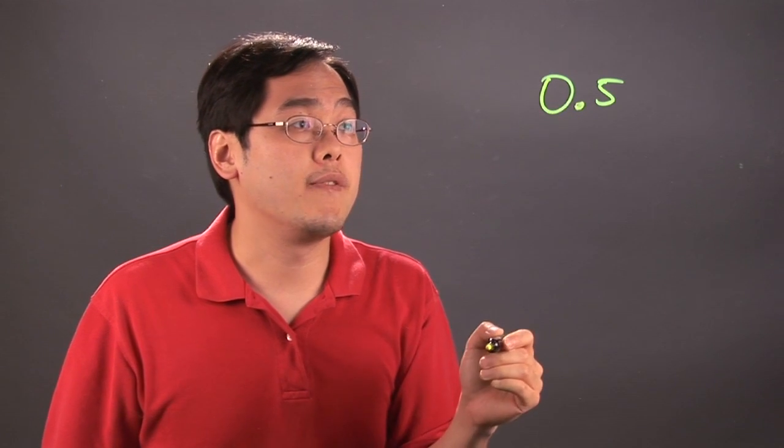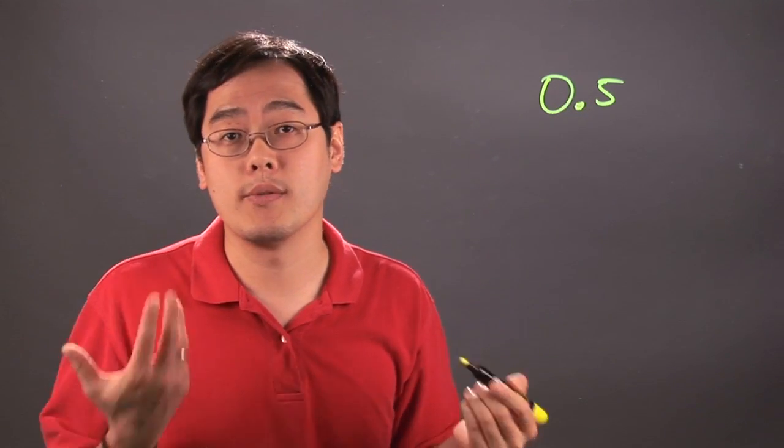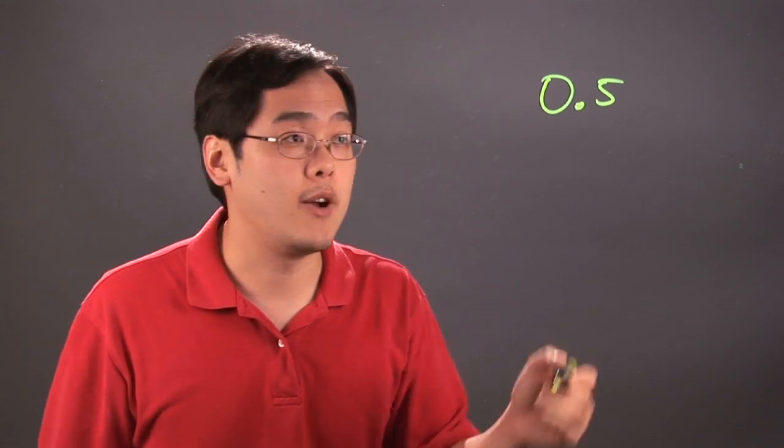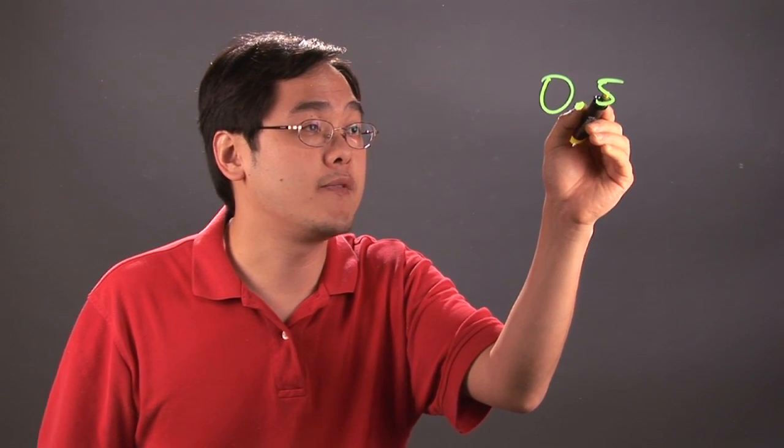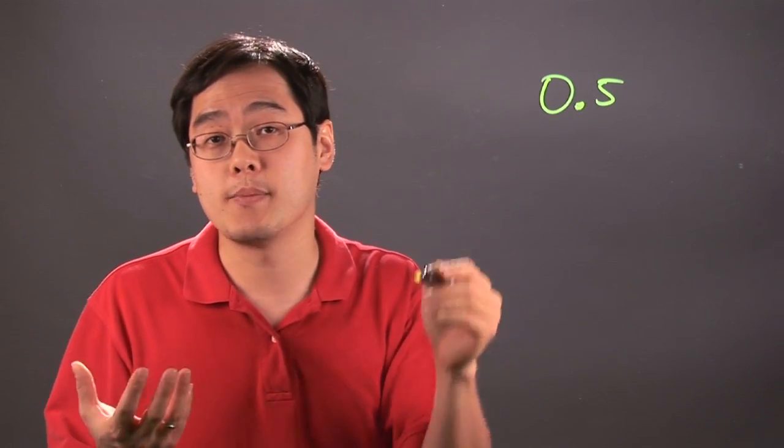Looking at 0.5, what are the rounding rules? 5 or above you round up, and below 5 you round down. So 0.5, because 5 is 5 or above, you round to the next possible number.